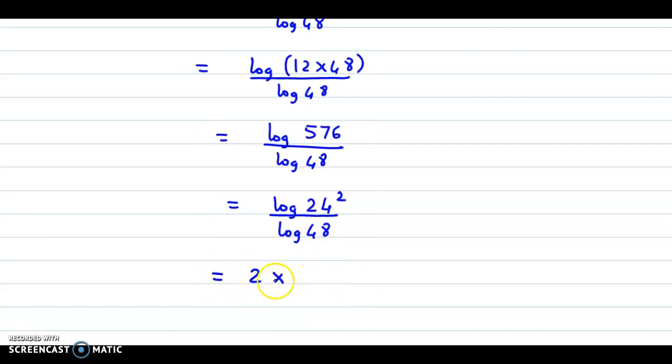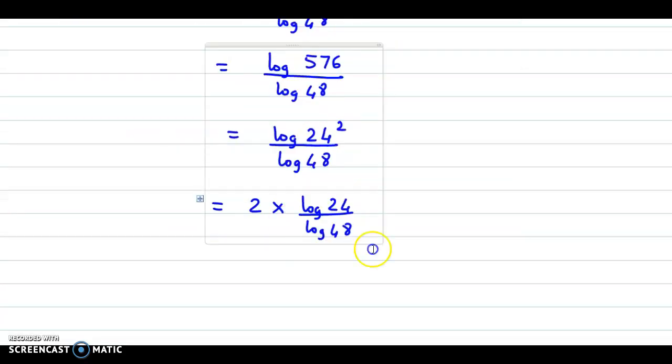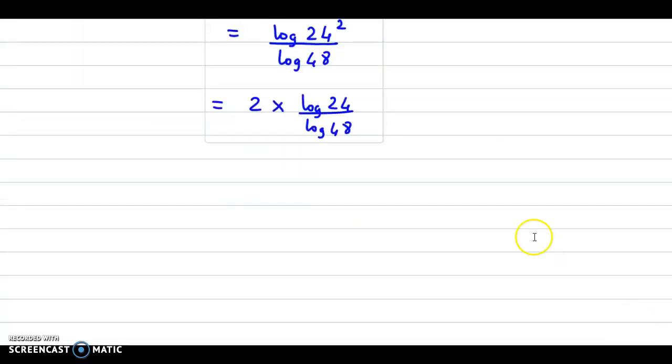We get two times log 24 upon log 48. Now we need the value in terms of x, y, and z. Now we have 24 and 48. If you see, we have 24 in the y term, and 48 is there in the z term. And if you observe a common term, 36, we have 36 in both of these terms. So what we do here is, we multiply and divide by 36.